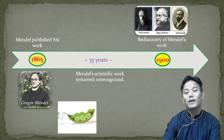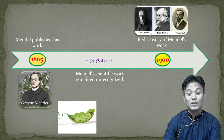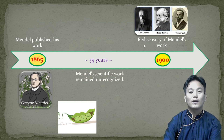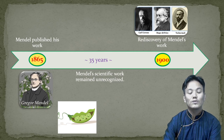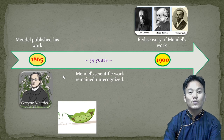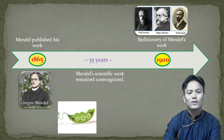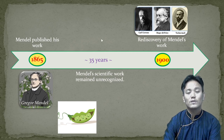His work was rediscovered by three people — Carl Correns, Hugo de Vries, and von Tschermak. These names are also important; you have to note them down. These were the three people who rediscovered Mendel's work in the year 1900. It was much later in year 1900 that his work got recognized and it was rediscovered by these three people.